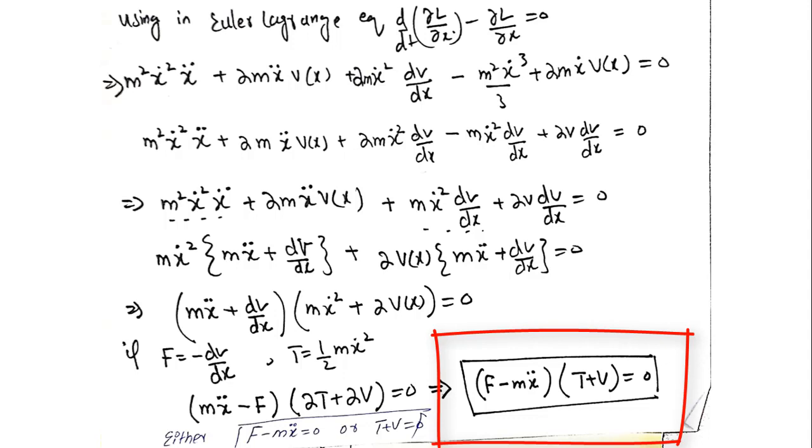Simplifying this I can get f minus m x double dot times T plus v is equal to zero. The terms in the first bracket are force minus acceleration and the second bracket contains the sum of kinetic energy and potential energy. The physical meaning of this equation is that for such a dynamical system, the difference of force and acceleration is zero or the sum of kinetic energy and potential energy is zero.